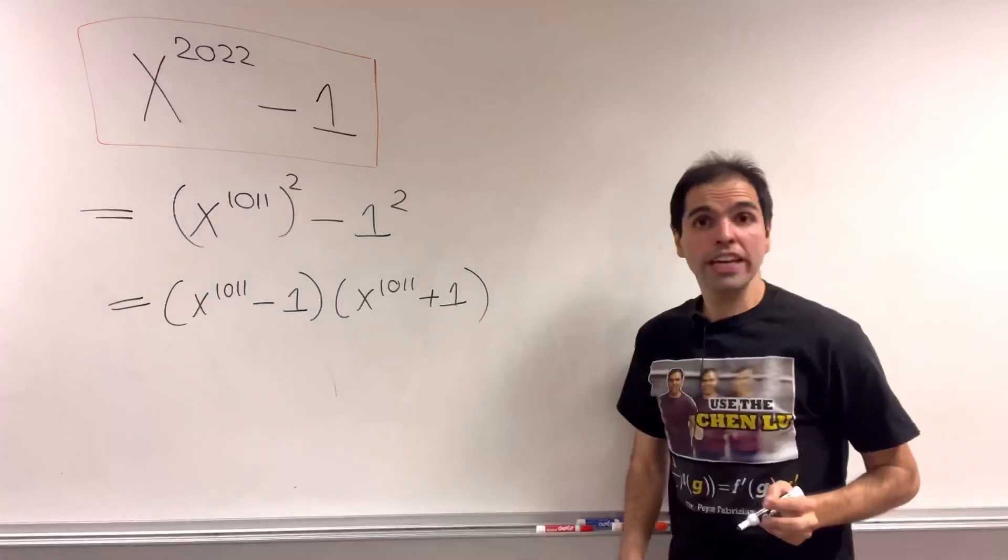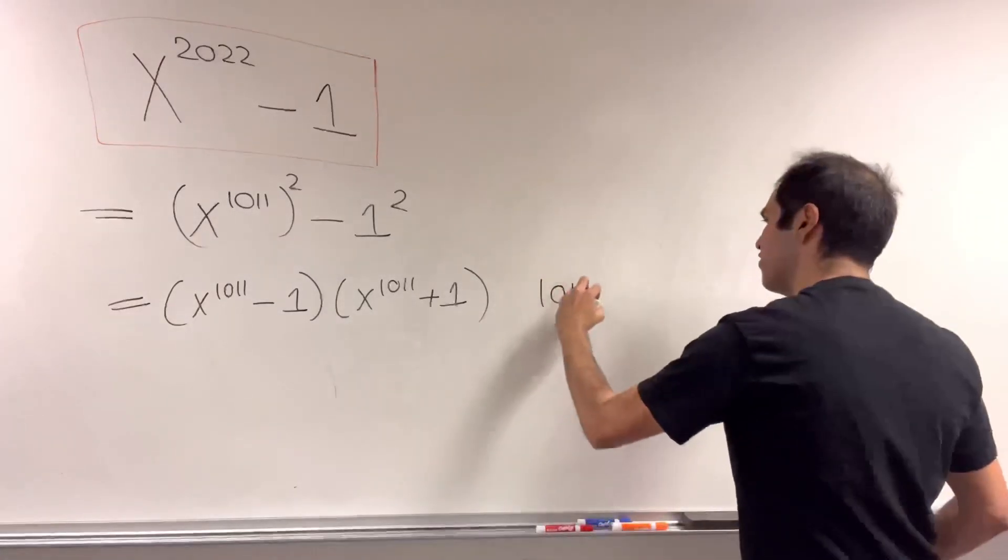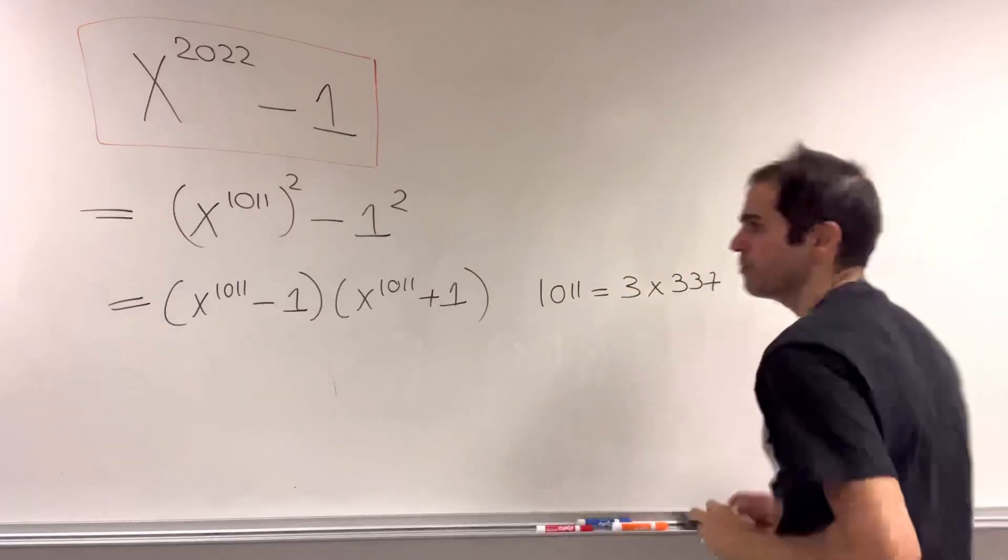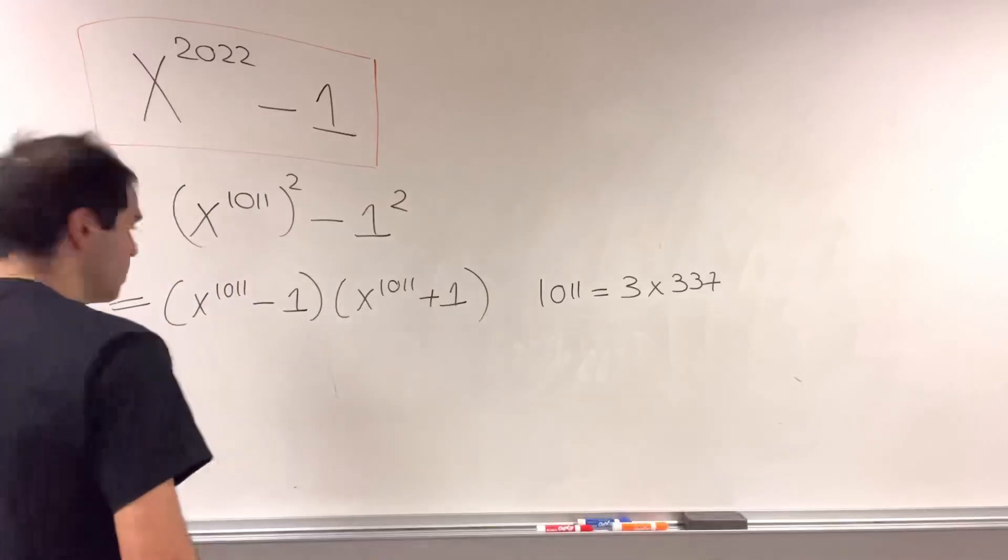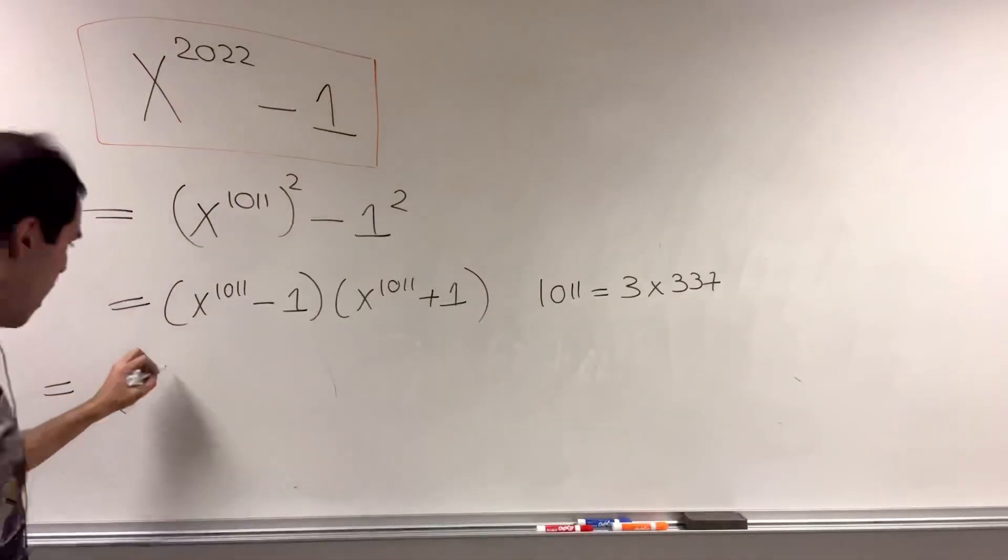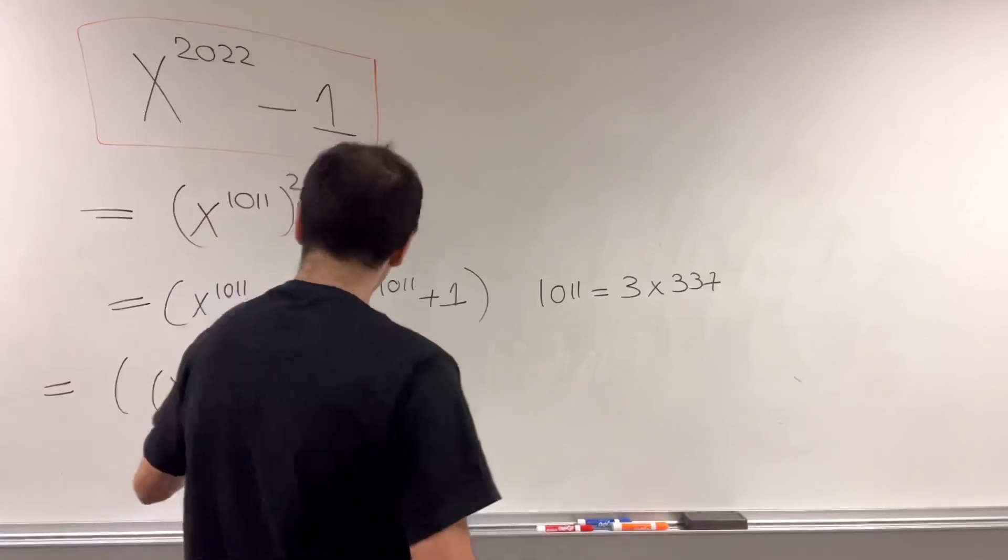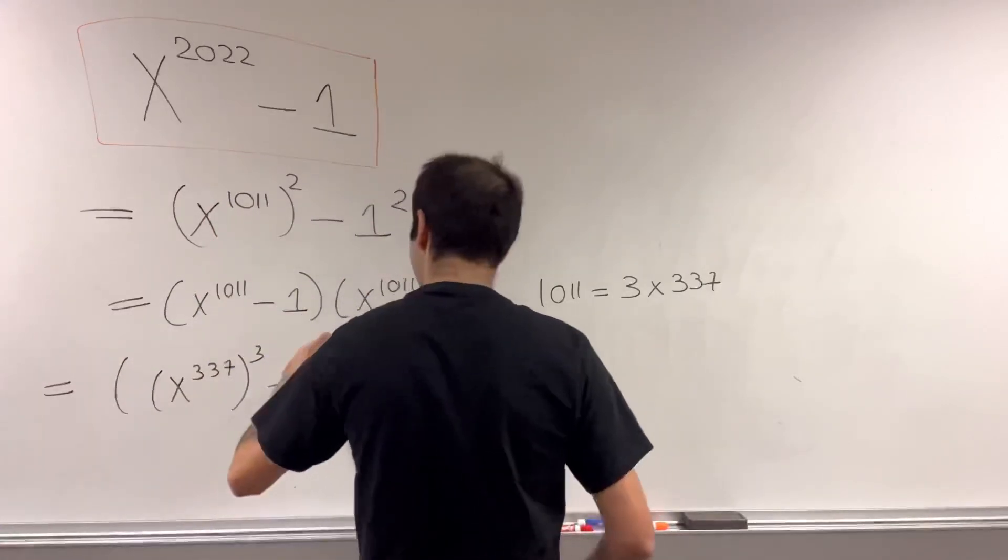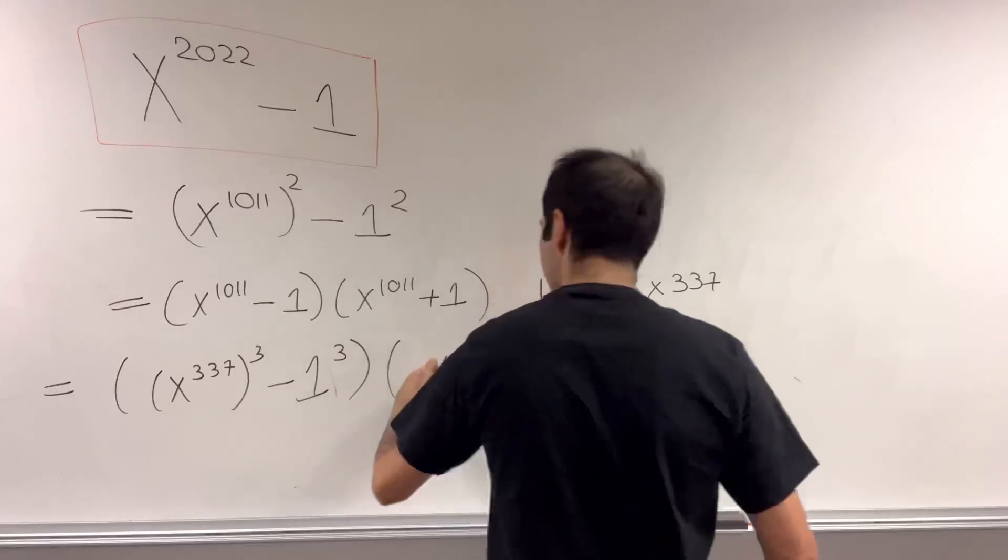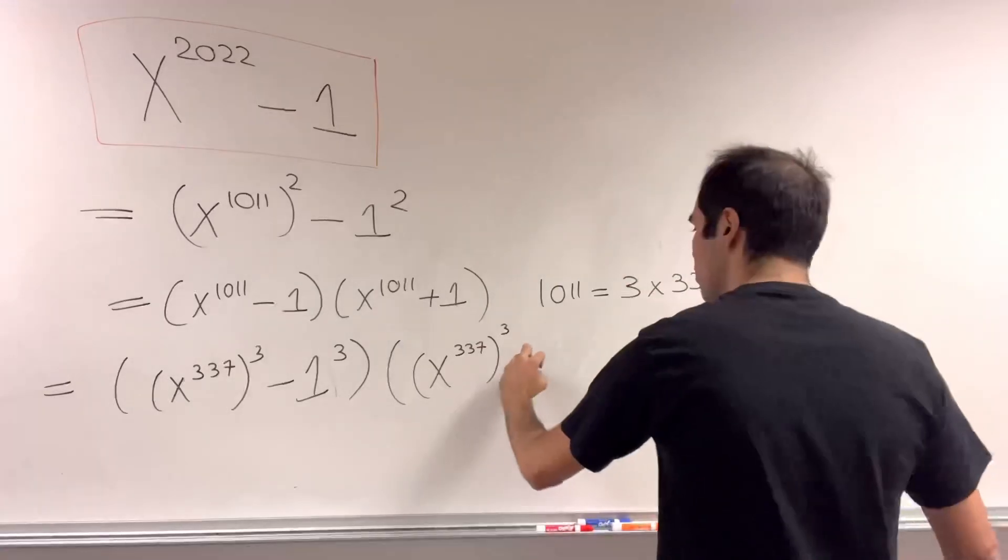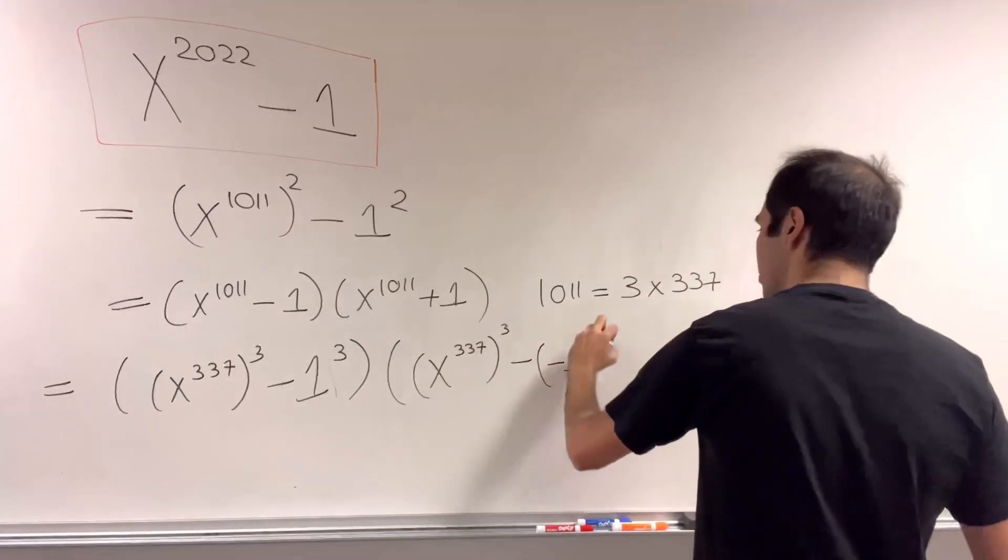But we can do even better than that because 1011, that is 3 times 337. So this now becomes x to the 337 cubed minus 1, so which is minus 1 cubed, times x to the 337 cubed plus 1, which is minus minus 1 cubed.